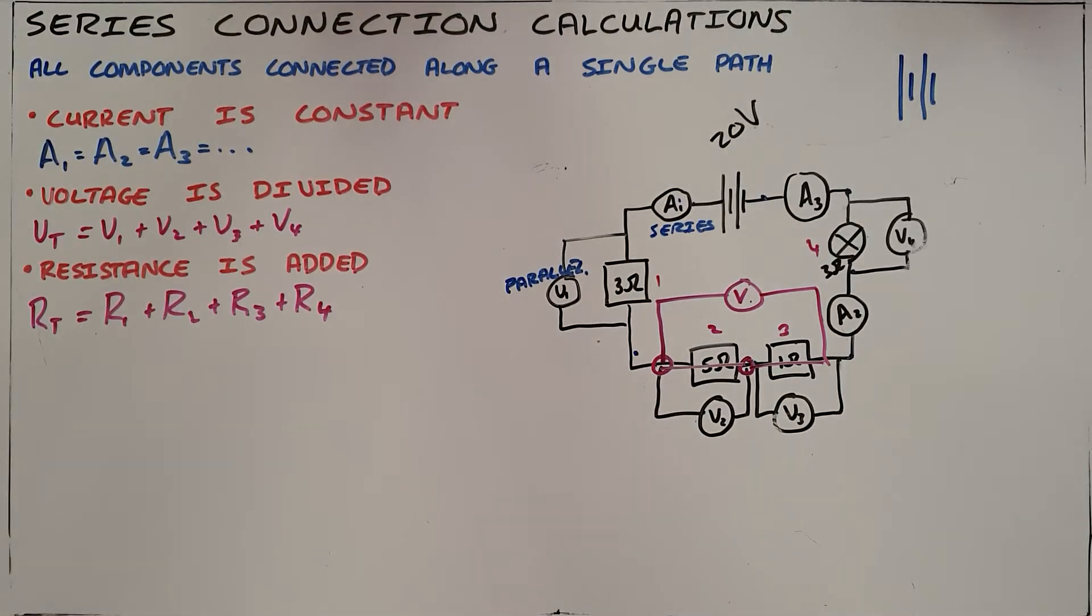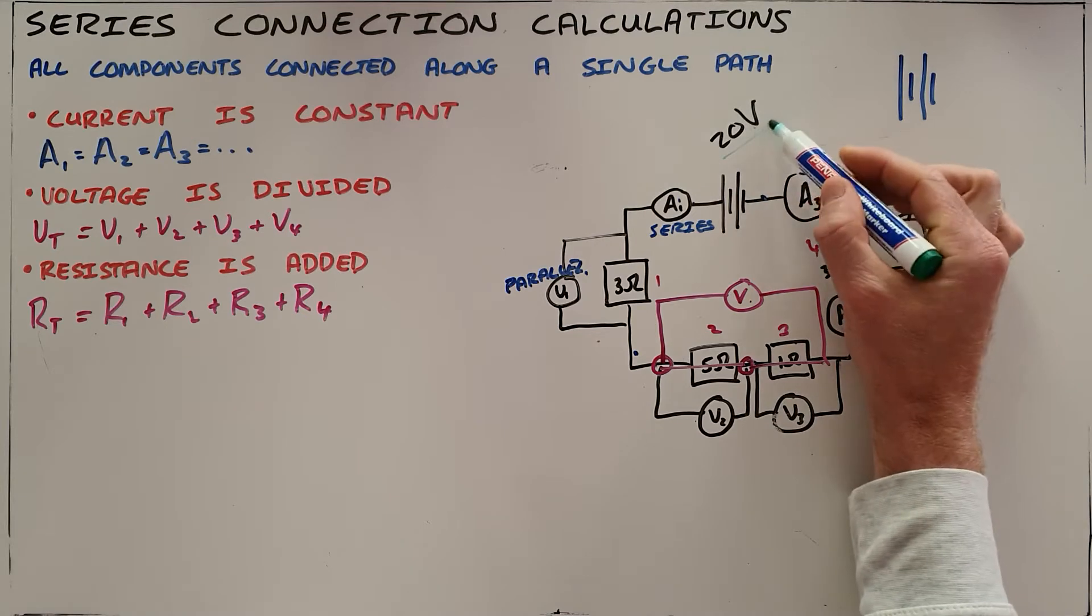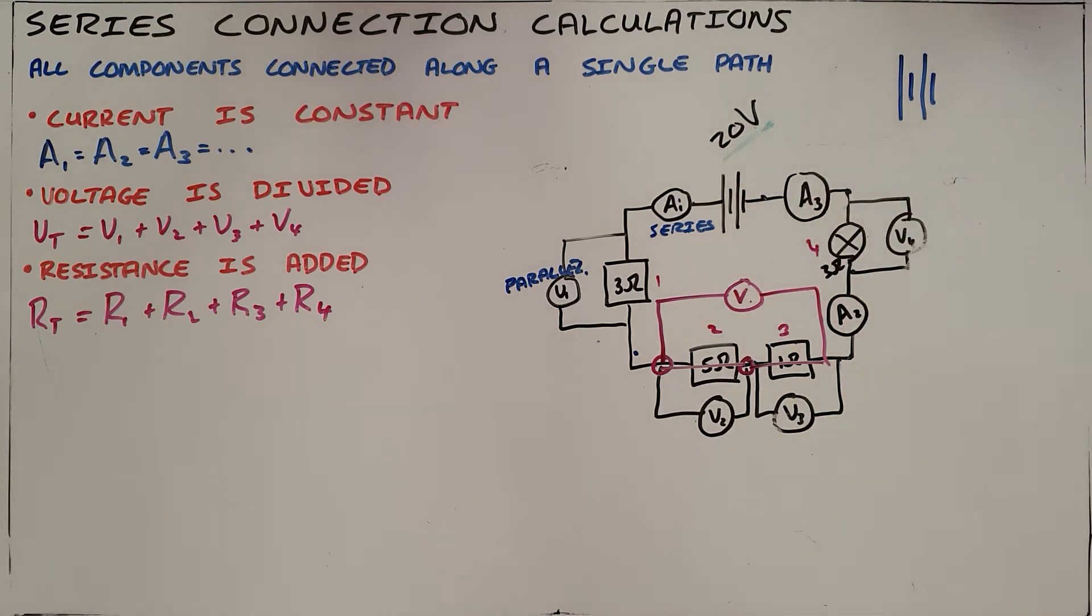Once we understand the three rules behind a series connection, we can then use Ohm's law to calculate unknown values within that circuit. So, in this example over here, if we want to find the current in the circuit, we would start by, since we know already what the total voltage provided is by that battery, we would now start by calculating what the total resistance is.